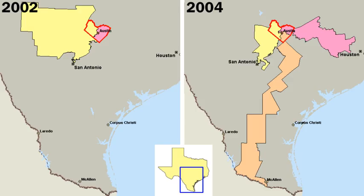There are no restrictions, however, on the amounts PACs can spend independently to advocate a point of view or to urge the election of candidates to office. The number of interest groups has mushroomed, with more and more of them operating offices in Washington, D.C., and representing themselves directly to Congress and federal agencies. Many organizations that keep an eye on Washington seek financial and moral support from ordinary citizens. Since many of them focus on a narrow set of concerns or even on a single issue, and often a single issue of enormous emotional weight, they compete with the parties for citizens' dollars, time, and passion.